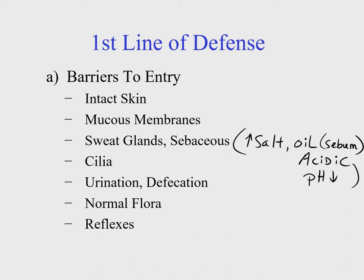Cilia is a component of the first line of defense found within the respiratory airways. There is a place in our anatomy with cilia referred to as the mucociliary escalator, which works to keep mucus from going downward into the lower respiratory tract. Having healthy functioning cilia helps to sweep along secretions from the mucous membranes and keep fluid from building up in our lungs.